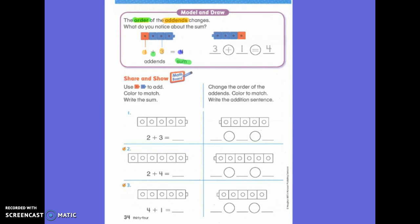What does sum mean? What the whole thing equals, all together. What are these two things called? Addends. Thank you. What are they called? Addends. Very good.